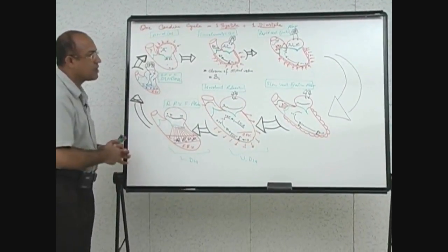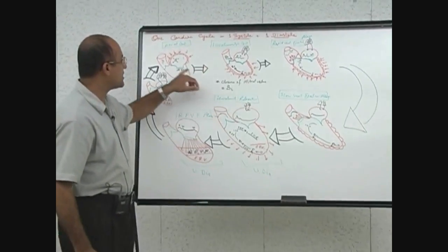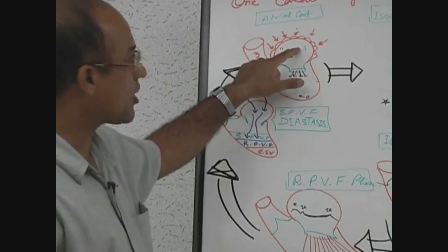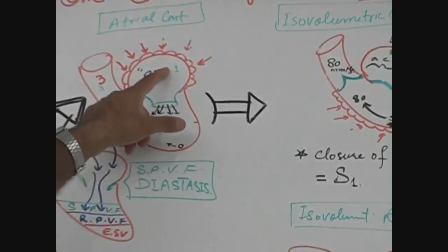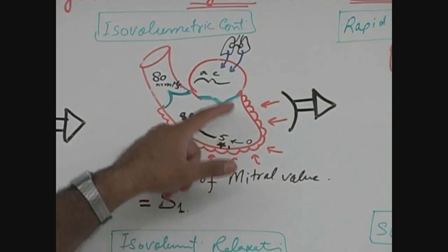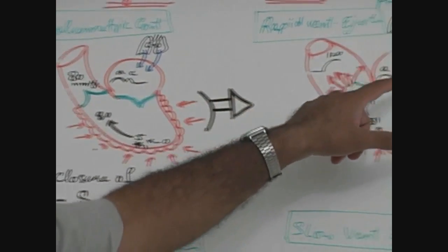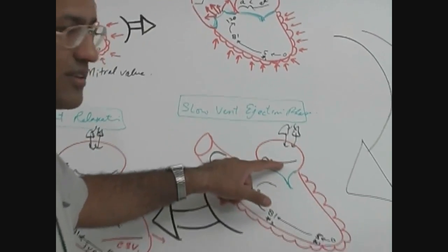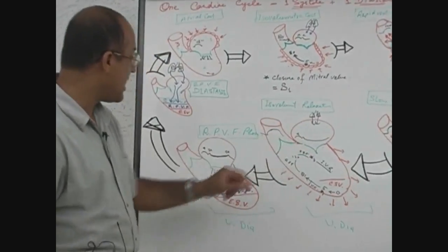How many stages of the cardiac cycle have we discussed? Starting from atrial contraction: first is atrial systole, then after that comes atrial diastole with the onset of ventricular contraction. Venous blood is still accumulating during atrial diastole, ventricular systole continues with atrial diastole ongoing, then ventricular diastole starts but atrial diastole still continues.